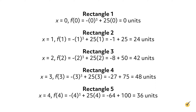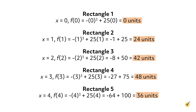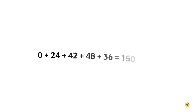Each of these rectangles has a width of 1, so their areas (width times height) are each just equal to their height. These areas are 0, 24, 42, 48, and 36, which all add up to 150 square units.